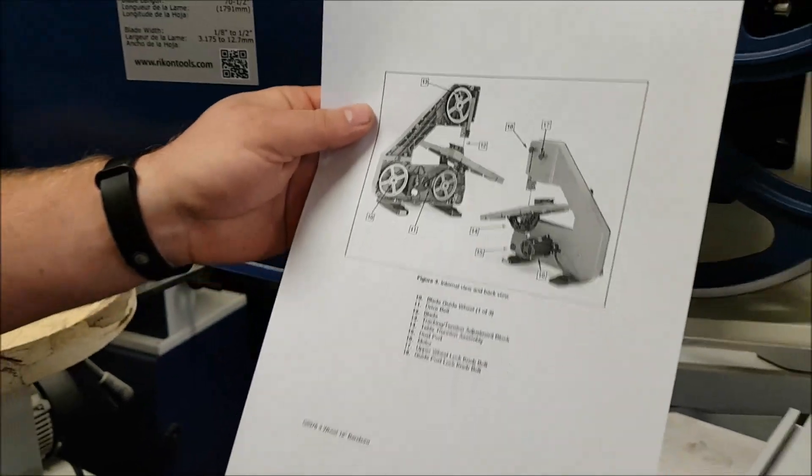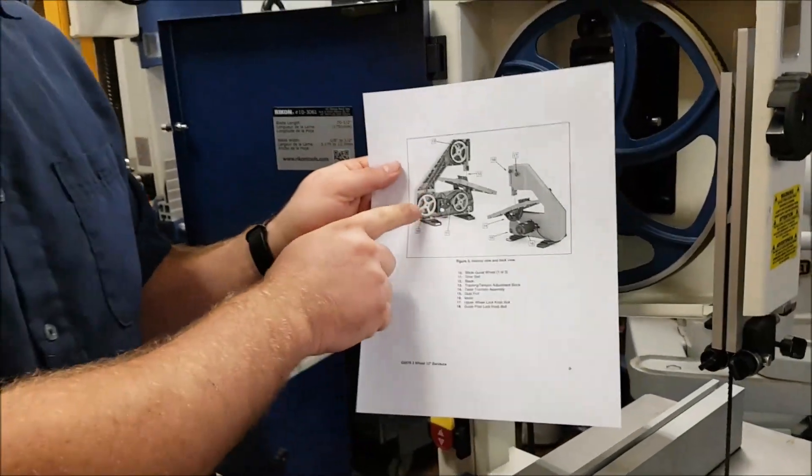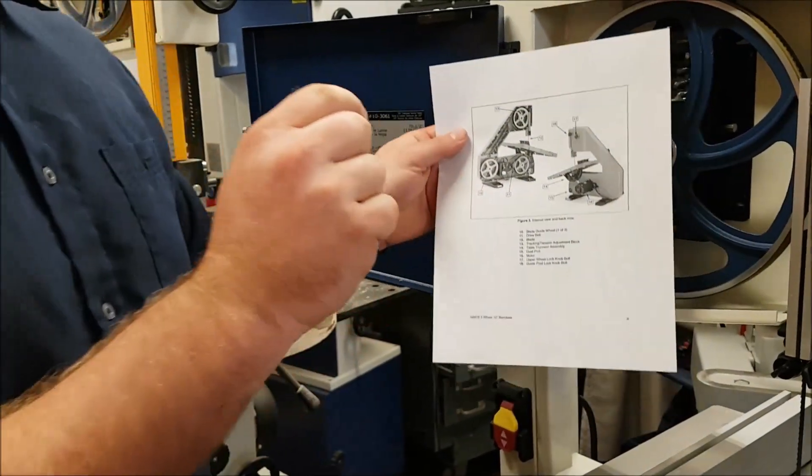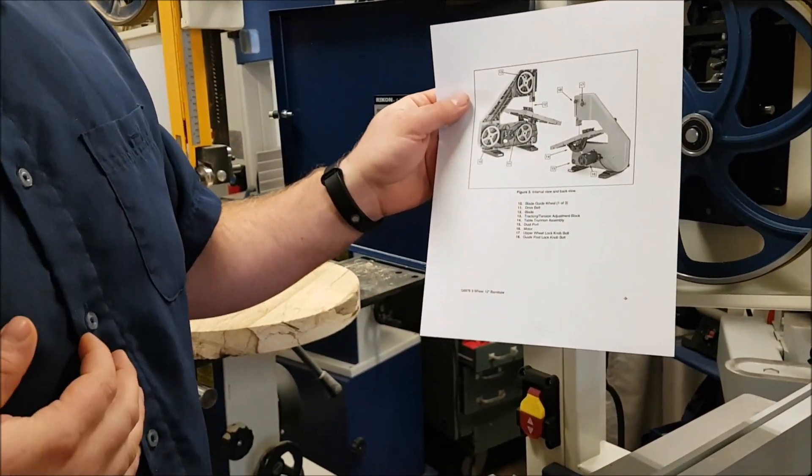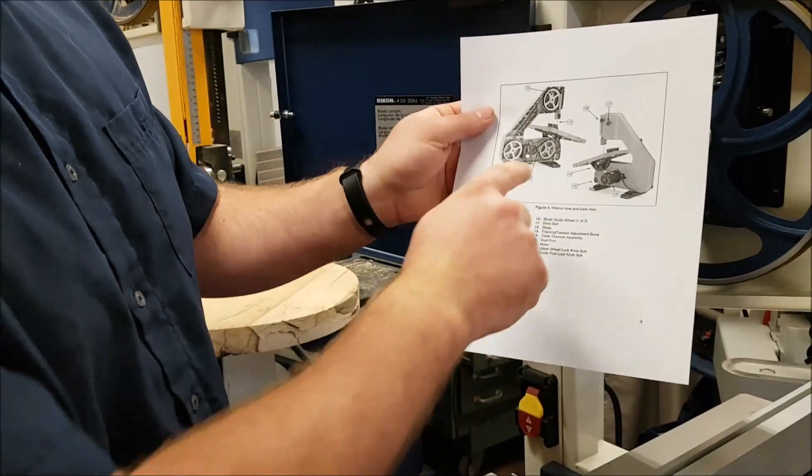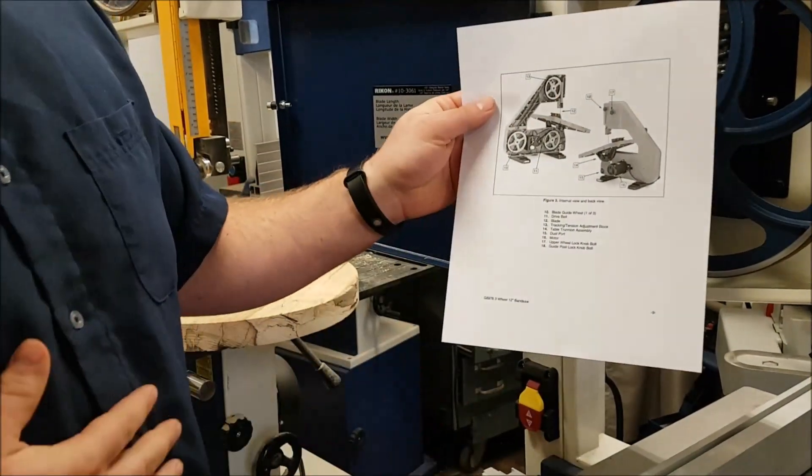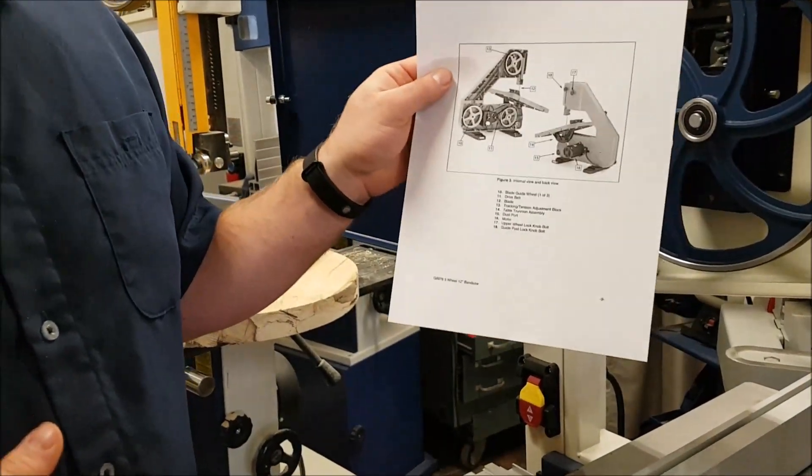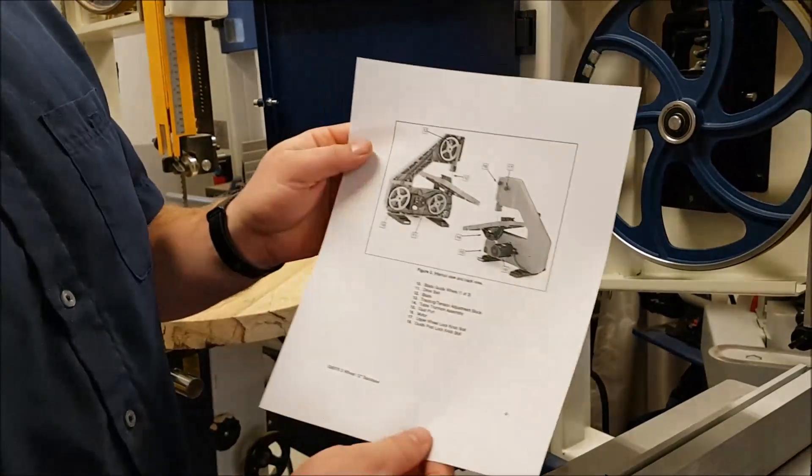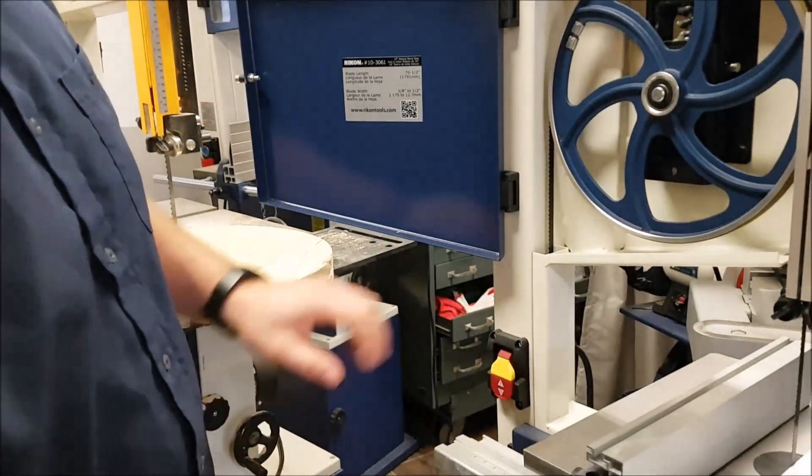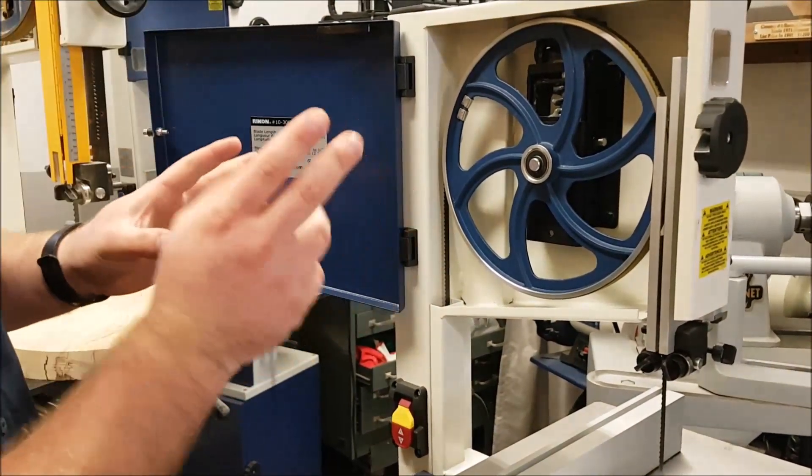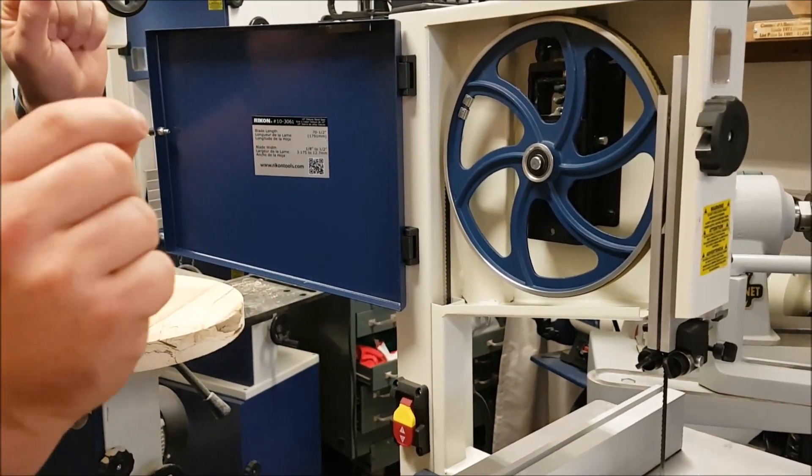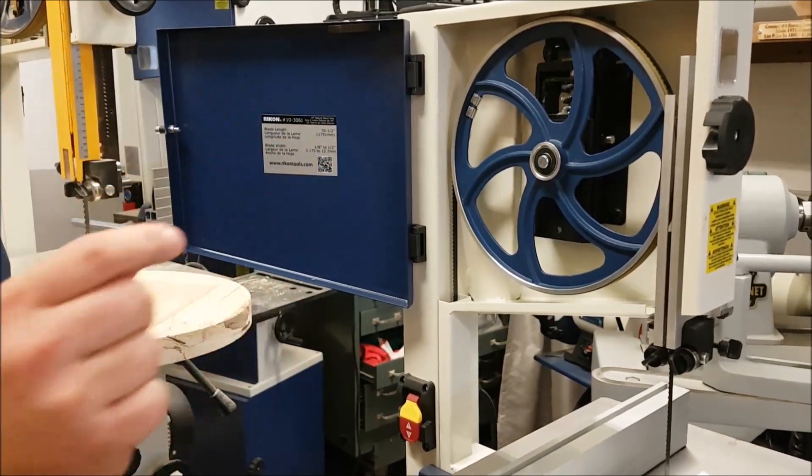So we sell a special blade specifically for these three-wheel bandsaws, and it is 0.02 inches wide. So quite thin, but they won't snap, and they won't break, and they work really well on these machines. They're called a three-wheel flexible back. The blade for this one, you're not going to want to go with a 0.032-inch wide blade, which is often advertised as a wood churner band.